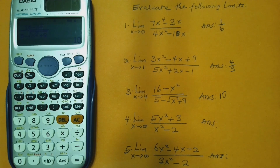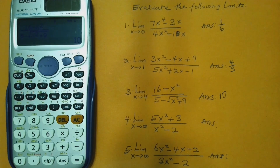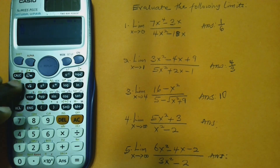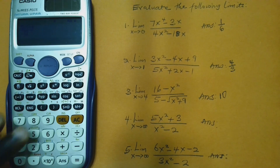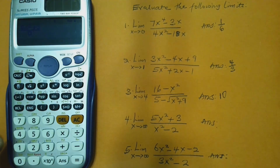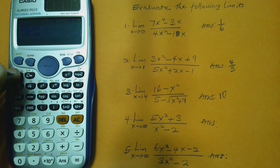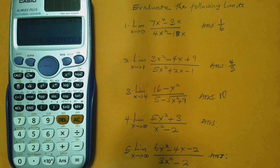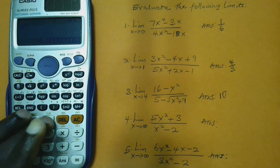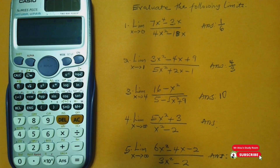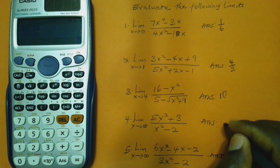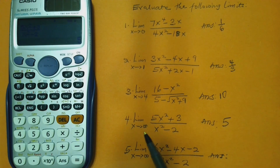Let's go to the fifth question: the limit of 5x² plus 3, all over x² minus 2, as x approaches infinity. Remember, I said that for infinity functions you must hit a number of nines for x. Let's start by pressing AC, then the fraction symbol, then 5 Alpha x squared plus 3, down arrow, Alpha x squared minus 2. Now press AC, and when it asks for the value of x — since x approaches infinity — just hit nine many times, then press equal to. That gives us 5. The limit of this function as x approaches infinity is 5.